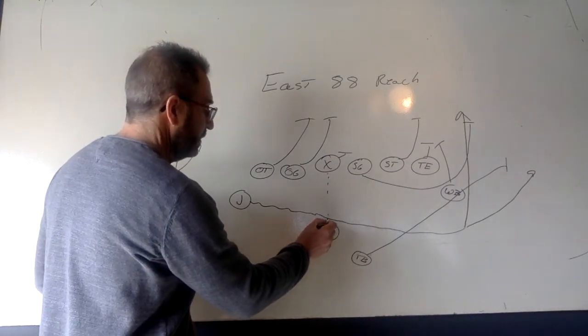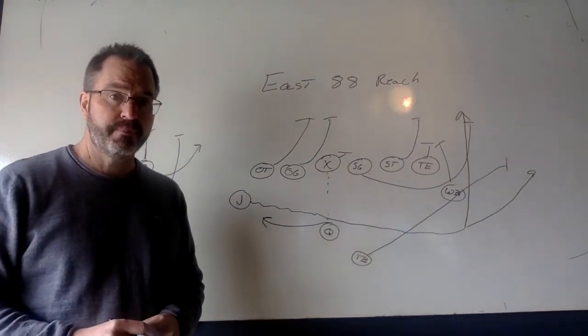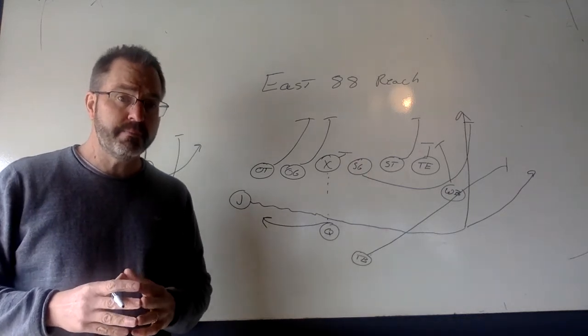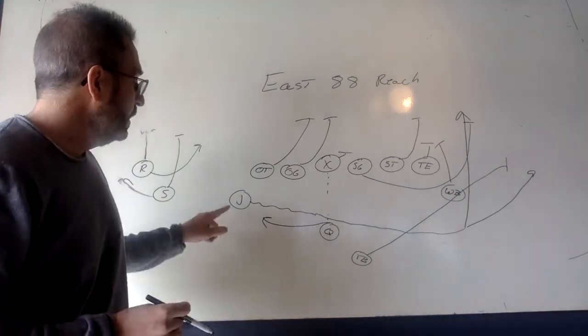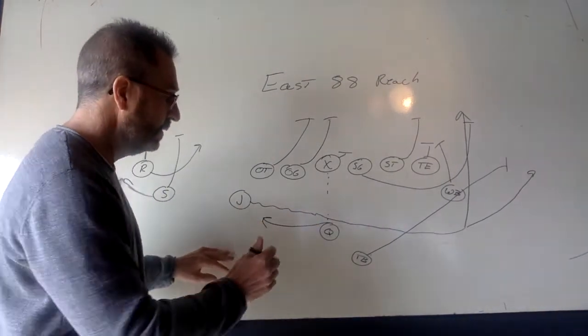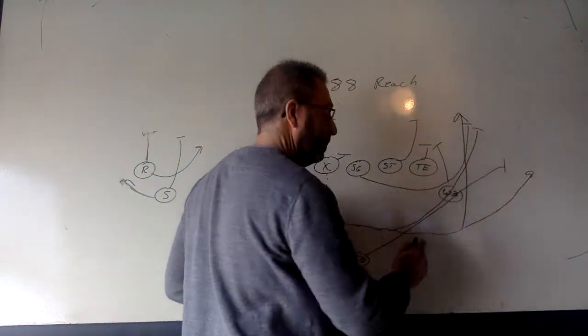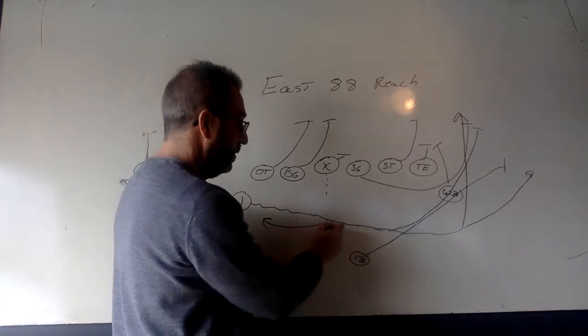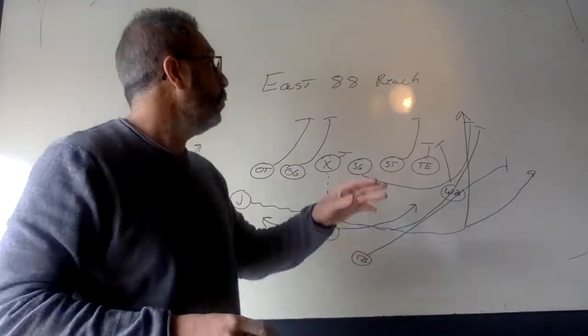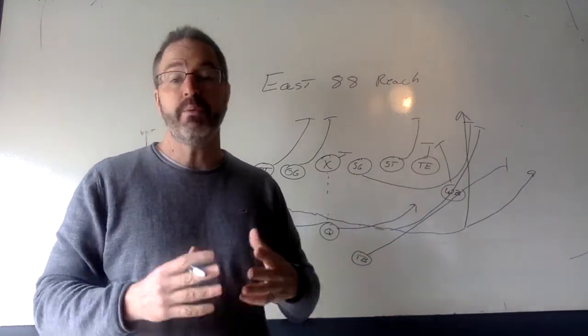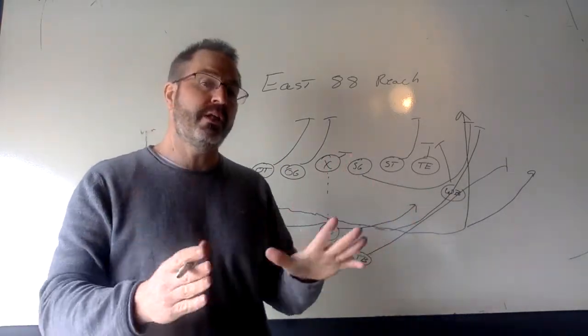The quarterback, after handing off the ball, will sprint out to the left. Now, here's the other changes that we're potentially going to make this year. We're going to put another play on this. Where the jet, instead of getting the handoff, comes in front of the quarterback and leads up as a blocker. And the quarterback keeps the ball and follows the jet. And we'll call that East 88 reach follow, or maybe we'll call it lead. Regardless, I'll go over that in more detail in a later video.